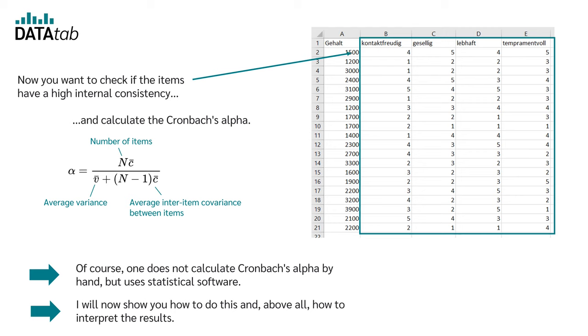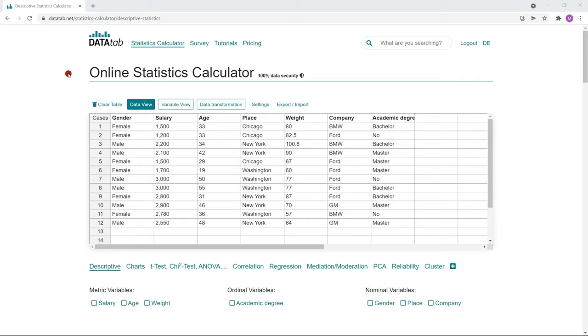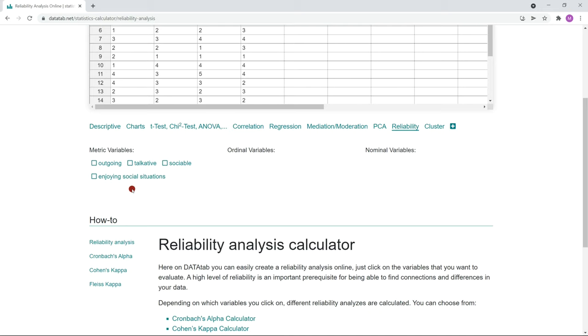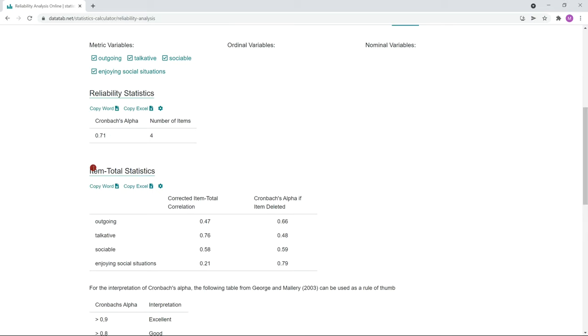In order to calculate the Cronbach's alpha, just go to datatab.net and you find a link also in the video description. Then you copy your data into this table. Further, you just click on the link Reliability. We want to calculate the Cronbach's alpha for these four items, so we just click on them. Then Datatab will automatically calculate the Cronbach's alpha for us.